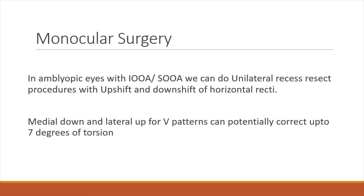When one eye is amblyopic, by convention we do not like to operate on the normal eye. In amblyopic eyes with inferior or superior oblique overaction, we can do a unilateral recess-resect without touching the oblique muscle — just doing horizontal upshift or downshift of the recti — which is equally effective. When doing a vertical upshift or downshift for the horizontal recti, it treats about seven degrees of torsion. If torsion is greater than seven degrees on fundus examination, you need to go for an oblique procedure.